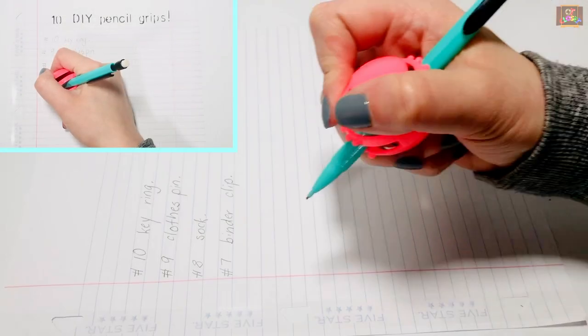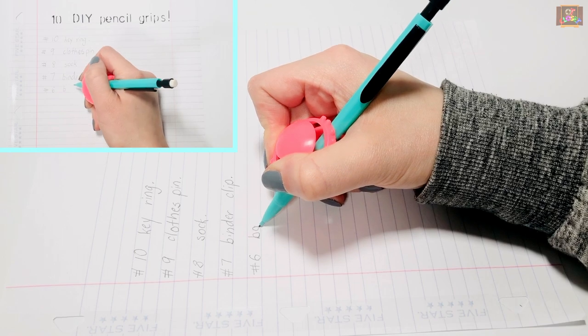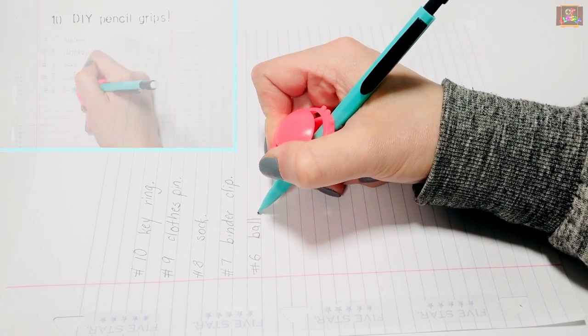The ball helps keep your child's thumb and index joints bent. It also provides support and opening of the web space.